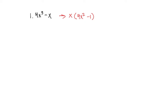Now, after we factor out the greatest common factor, can either one of my factors be factored even further? And the answer is yes, this one right here can be factored further. There are two terms, so we are going to use the difference of the squares. My a is 2x, and my b is 1. So my final factoring will be the greatest common factor times the factorization of 4x squared minus 1, which would be 2x plus 1 times 2x minus 1.